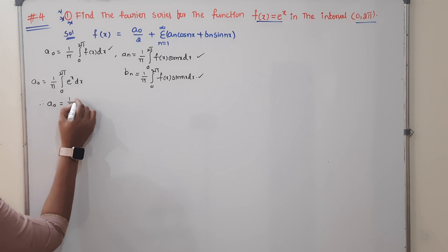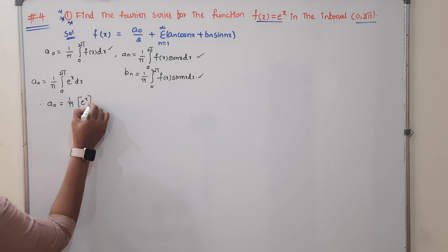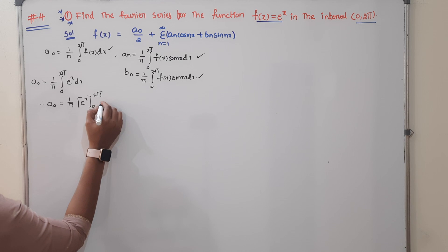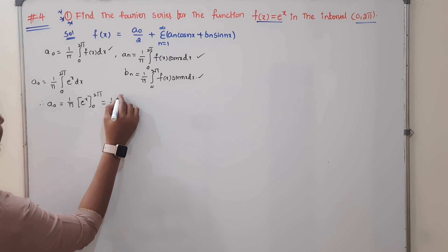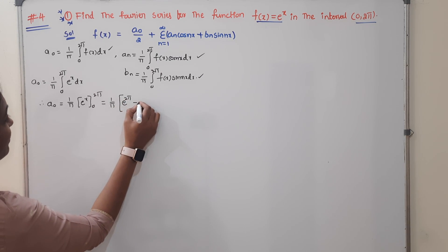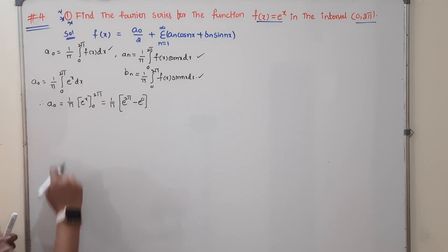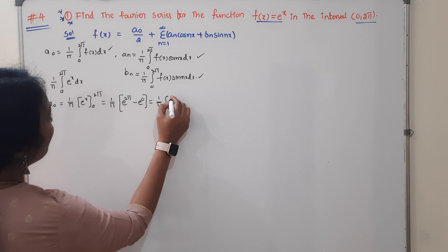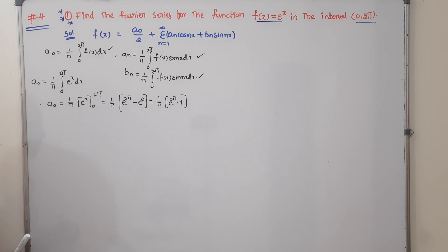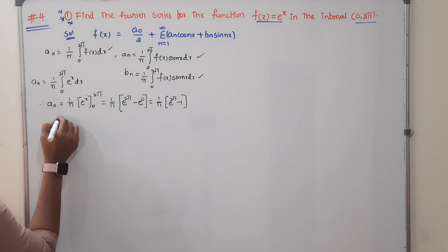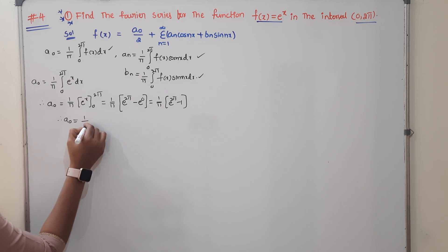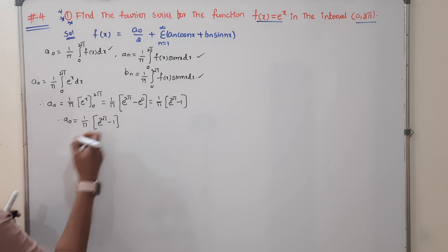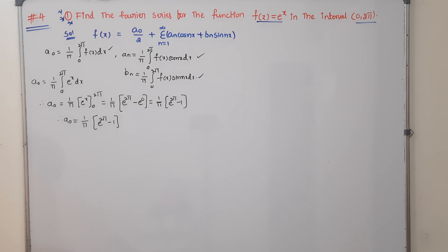Therefore a0 = (1/π)·[e^x] from 0 to 2π. Applying the limits: upper limit minus lower limit gives (1/π)·(e^(2π) − e^0) = (1/π)·(e^(2π) − 1). Therefore a0 = (e^(2π) − 1)/π.